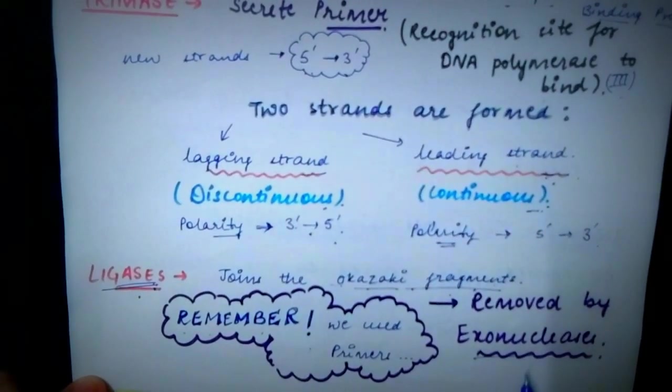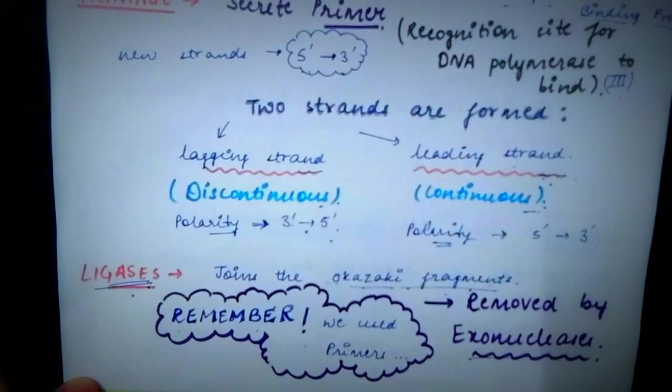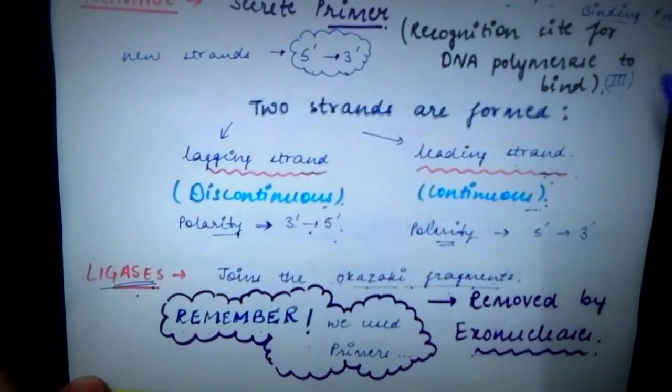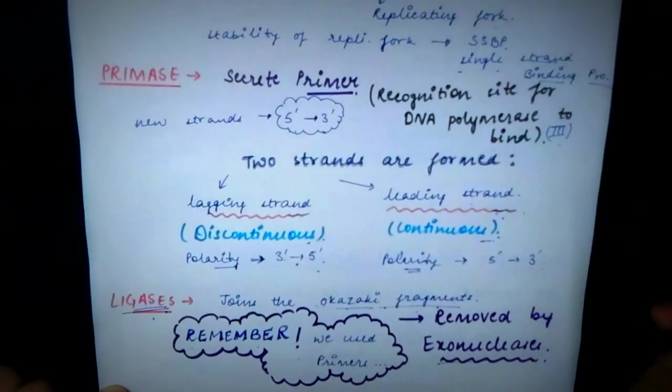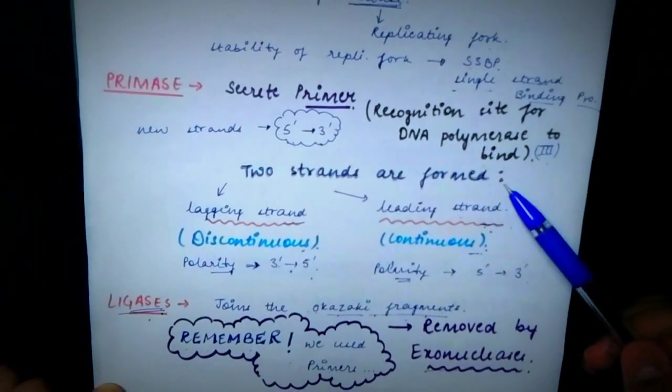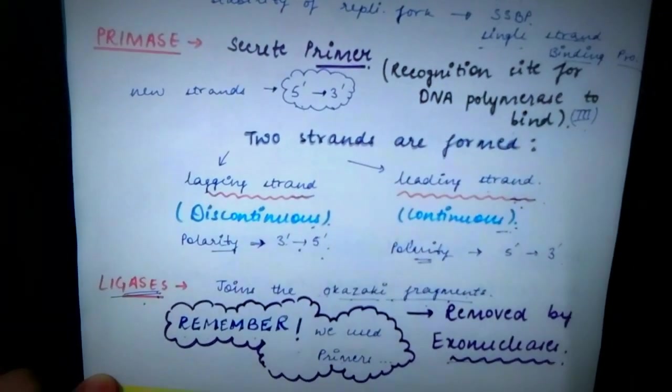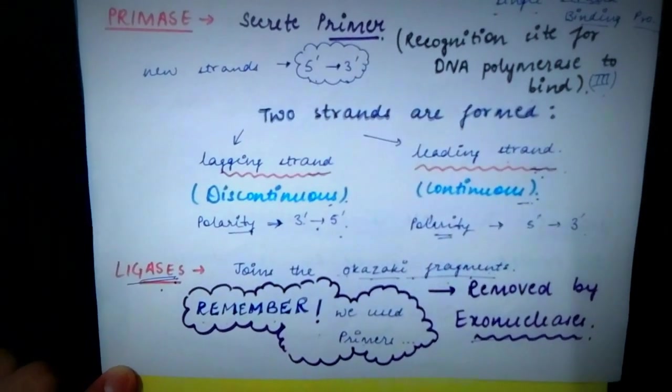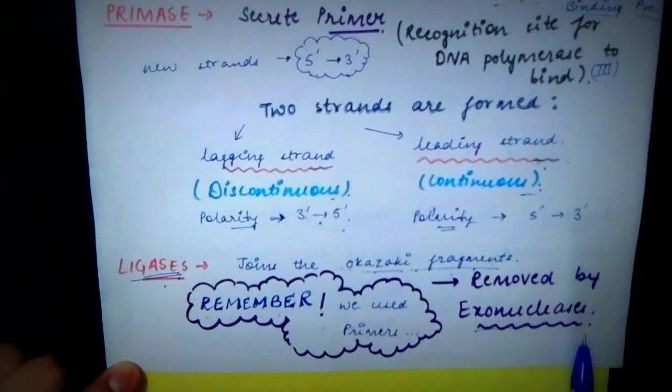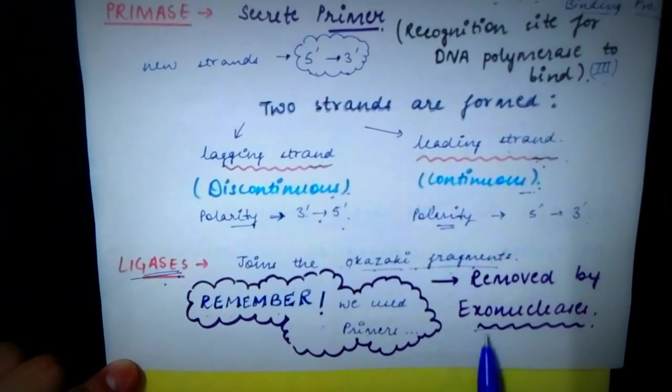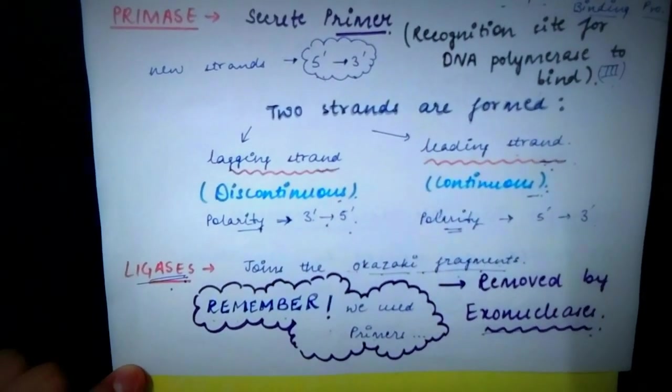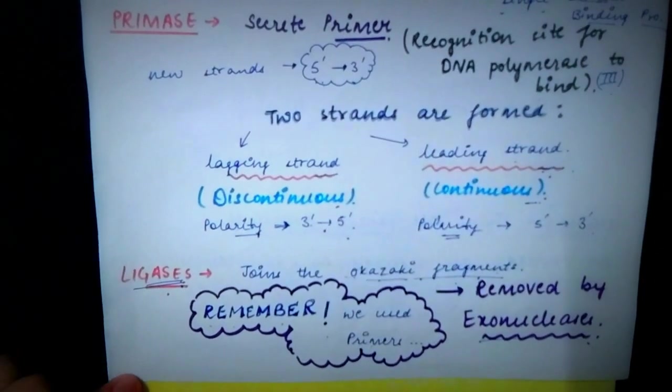Now, one thing to remember that we use the primers, right? The primers which act as a recognition site for DNA polymerase 3 to bind. So, here is a need to remove all these primers to complete the DNA replication process. And to remove all these primers, we need exonucleases. And with the action of exonucleases, our process of DNA replication finally completes.